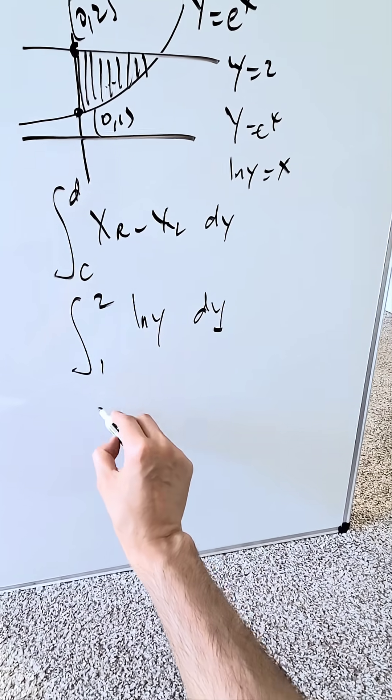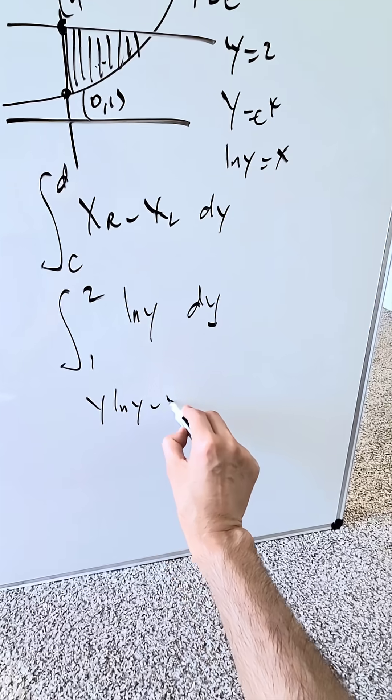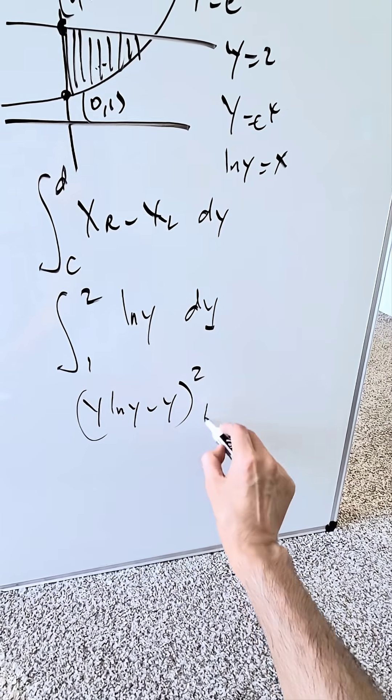What is the antiderivative here? It'll be y natural log y minus y, upper limit 2, lower limit 1.